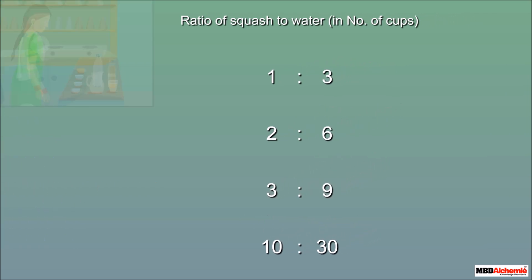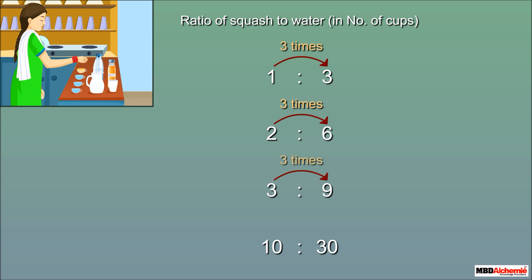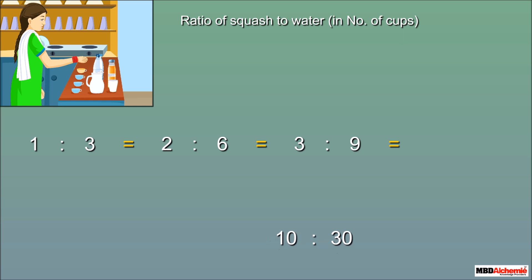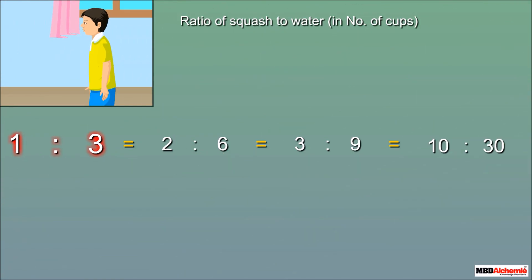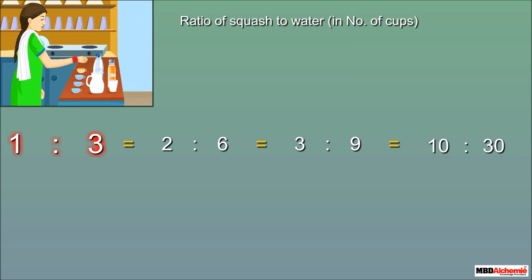For all the ratios we found, water is always three times the squash — the ratio is constant. Such ratios, obtained by multiplying or dividing by any counting number, are called equivalent ratios. One is to three is its lowest form, as it cannot be further divided.